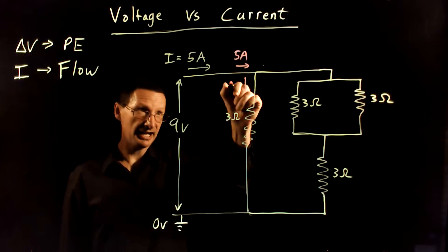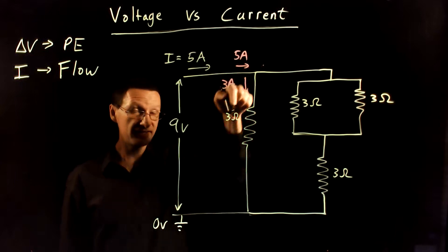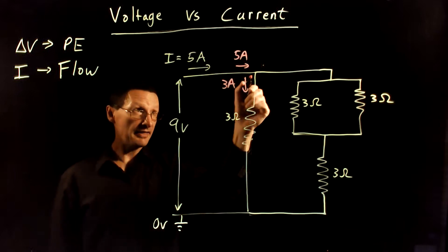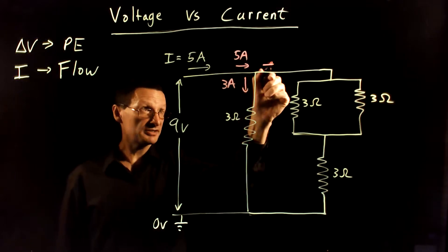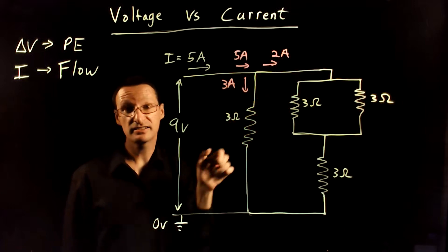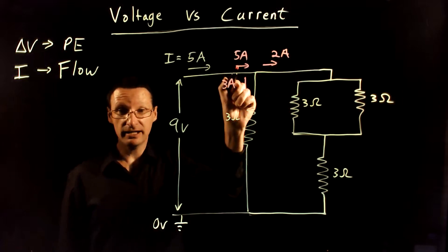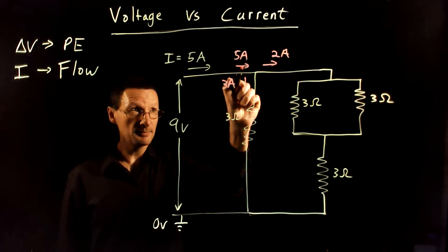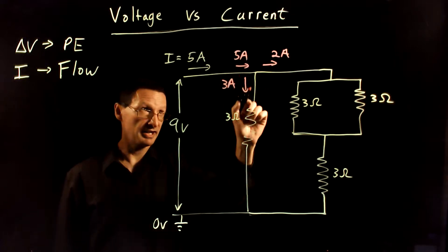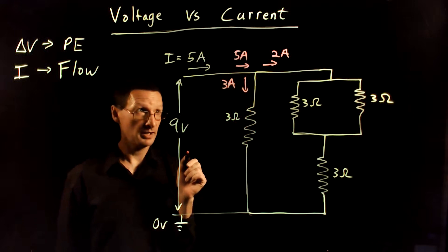Then we have to get five charges coming out of the junction. If I have three charges coming down in this direction, then that tells me I must have two charges, or two amps, coming this way. Whatever goes in — that's five amps coming in — must equal whatever goes out, that's two plus three amps going out.